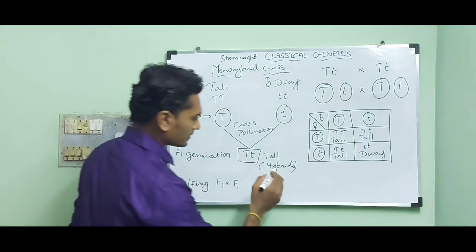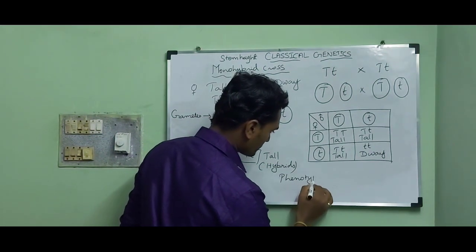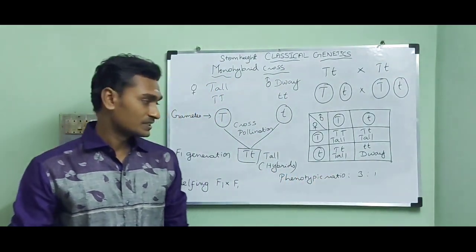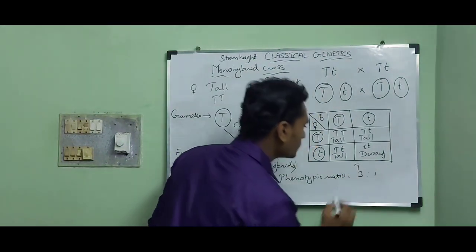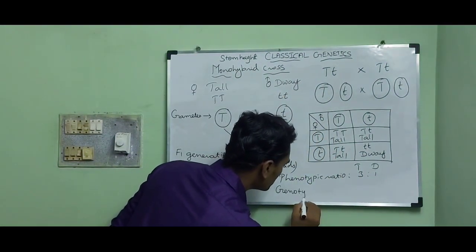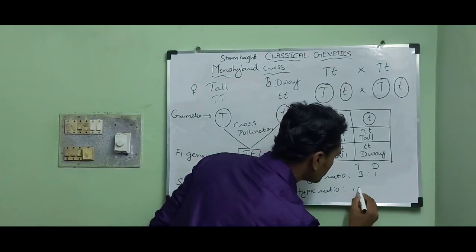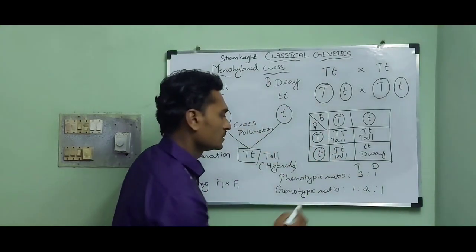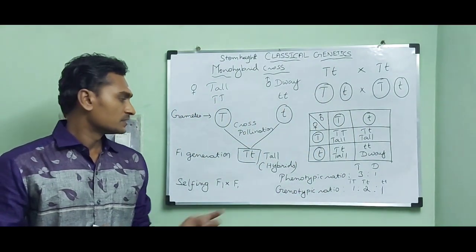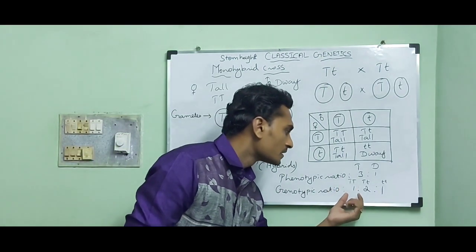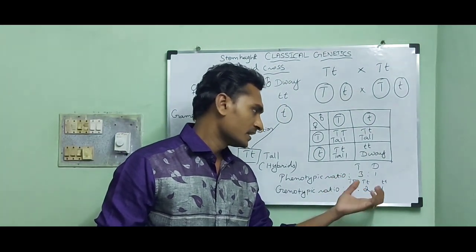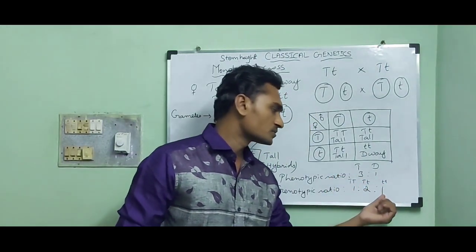The phenotypic ratio is 3:1, showing 75% tall offspring and 25% dwarf offspring. The genotypic ratio is 1:2:1 — 25% homozygous pure tall (TT), 50% heterozygous hybrid plants (Tt), and 25% homozygous pure dwarf plants (tt).